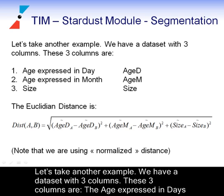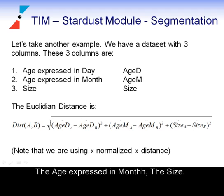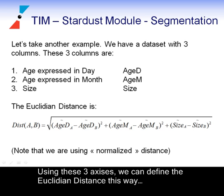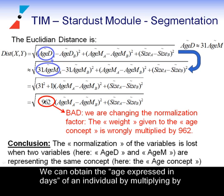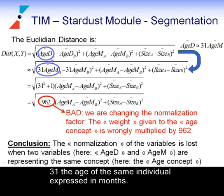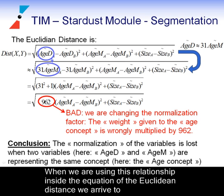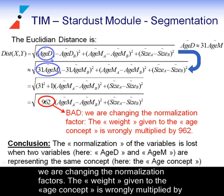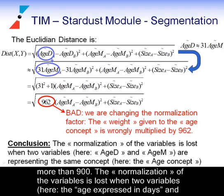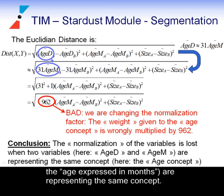Let's take another example. We have a dataset with three columns: the age expressed in days, the age expressed in months, and the size. Using these three axes, we can define the Euclidean distance. Note that we are using normalised distance. We can obtain the age in days by multiplying by 31 the age in months. When we use this relationship inside the equation, we arrive at a final equation where something is very wrong — we are changing the normalisation factor. The weight given to the age concept is wrongly multiplied by more than 900. The normalisation of the variables is lost when two variables, here age in days and age in months, are representing the same concept.